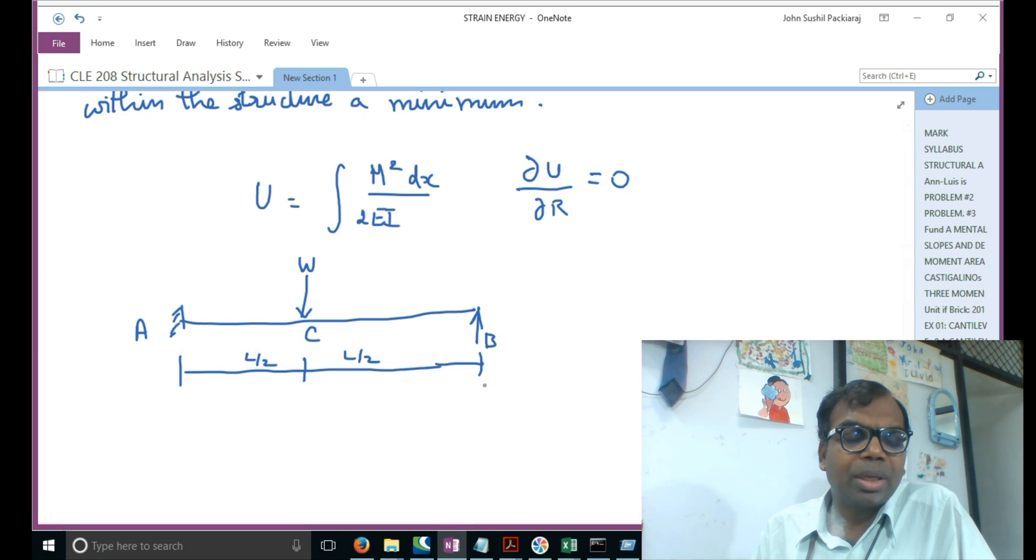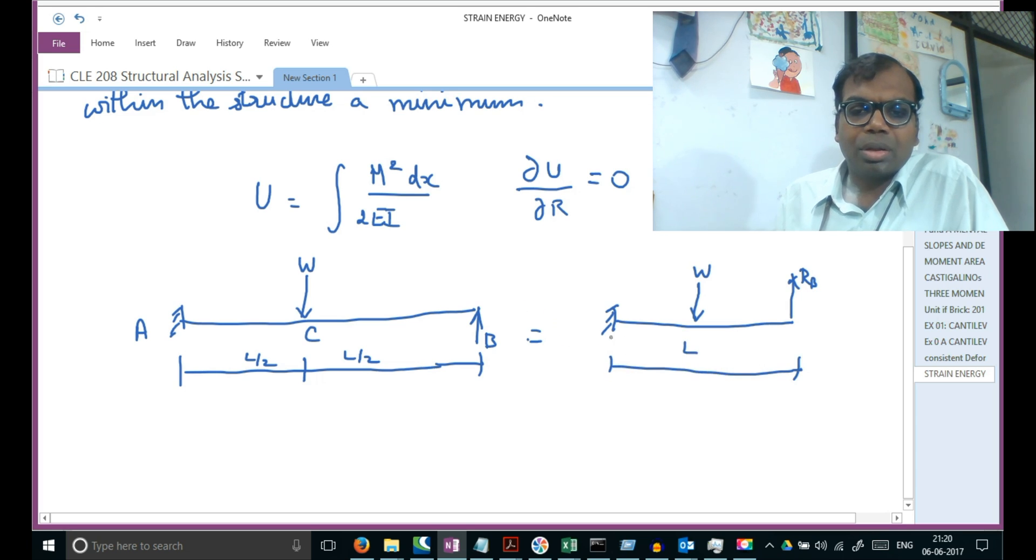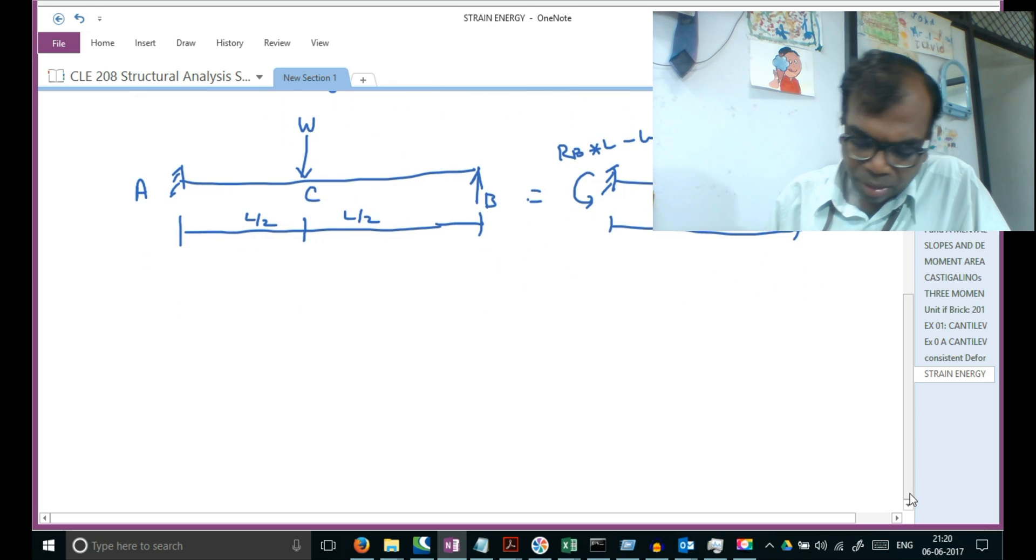When we make B redundant, the system reduces to a load W and a reaction RB. This force and moment will cause a moment which equals RB times L minus W times L by 2. This is the moment we'll be getting. Let's not worry about the signs now, just go ahead with what we need to do.